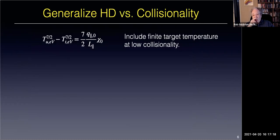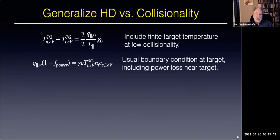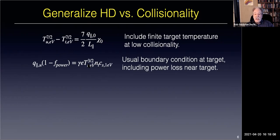We're going to take the heuristic drift model and generalize it versus collisionality. The first change: we won't just say the upstream temperature is given by Spitzer conductivity while ignoring the sheath piece—the original version omitted that piece; let's put it back in. The other change: we include radiated power near the diverter target. Whatever the upstream Q-parallel is, it gets reduced by radiated power near the target. The reduced Q-parallel must be carried into the target at the sound speed—the usual boundary condition including power loss.